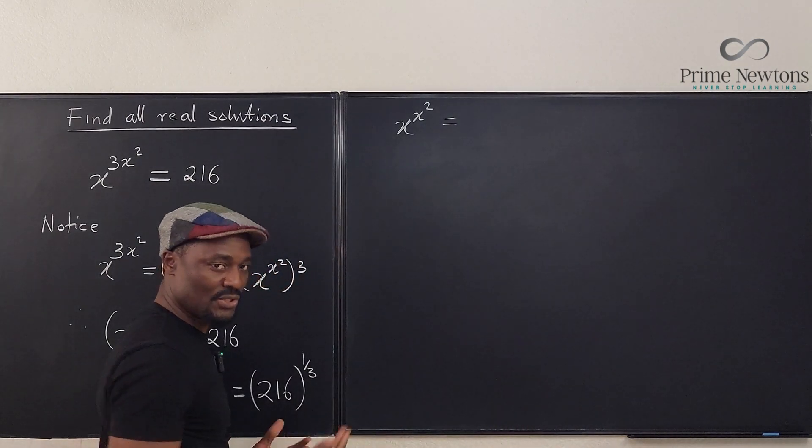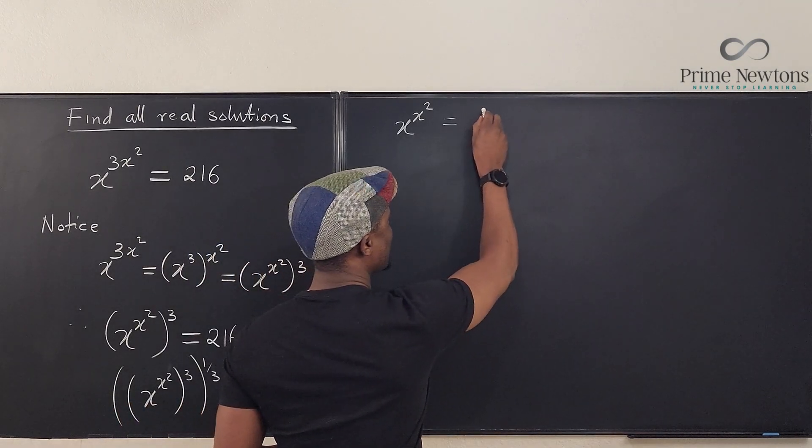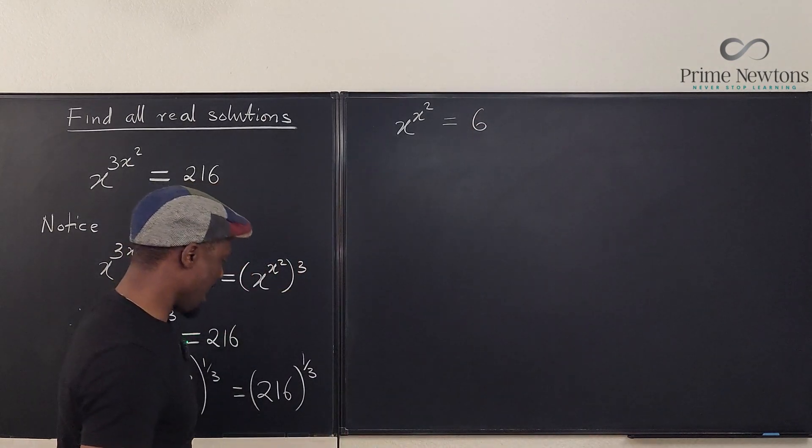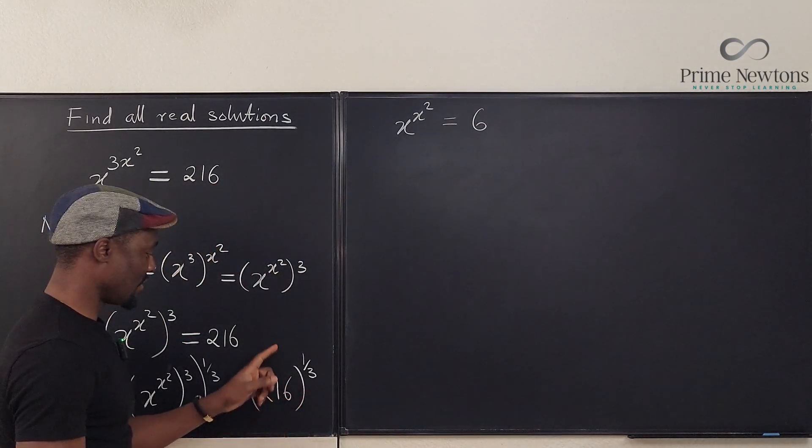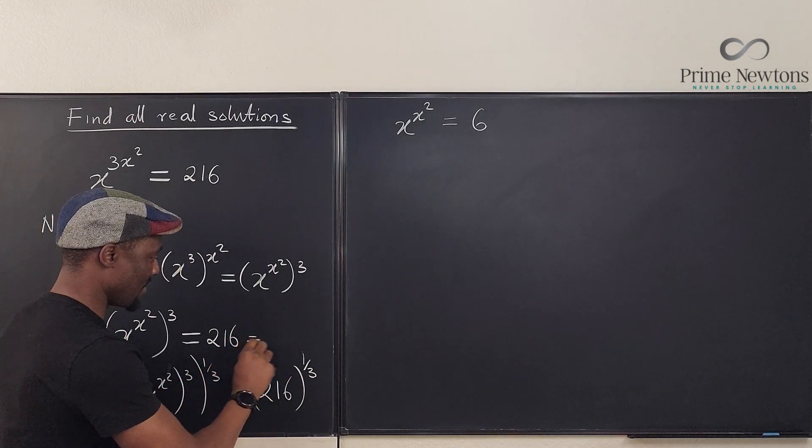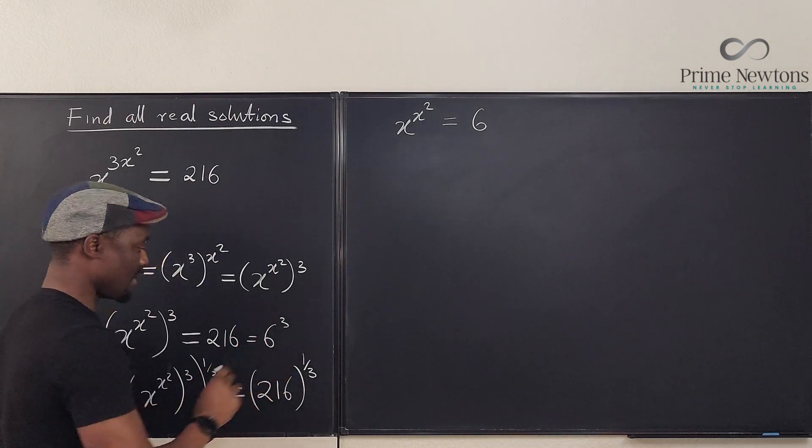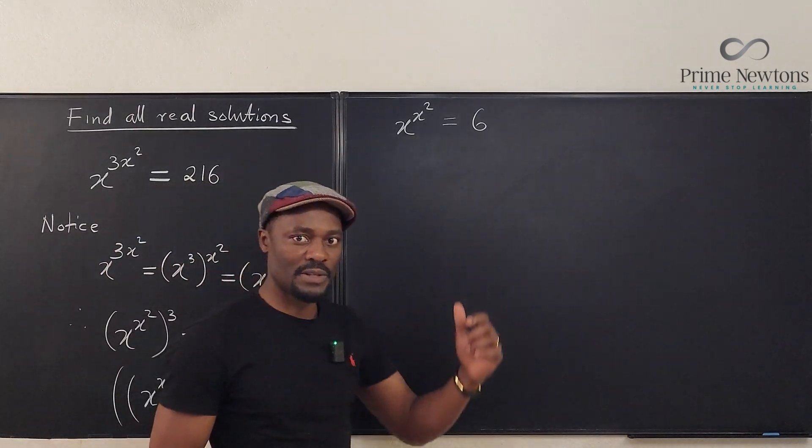This is going to be 6, because we could have written this as 6 to the third. So how do you solve this?